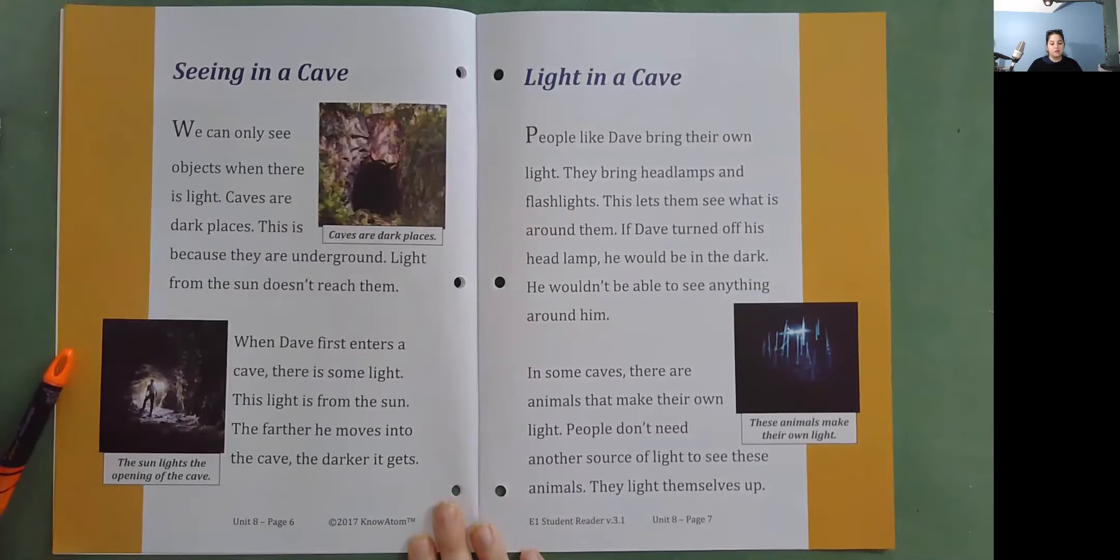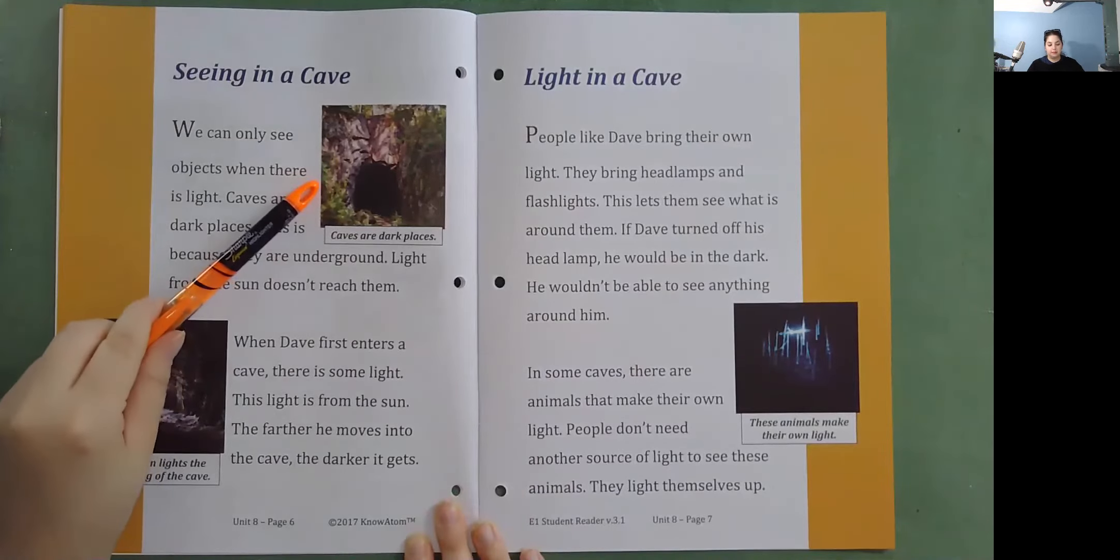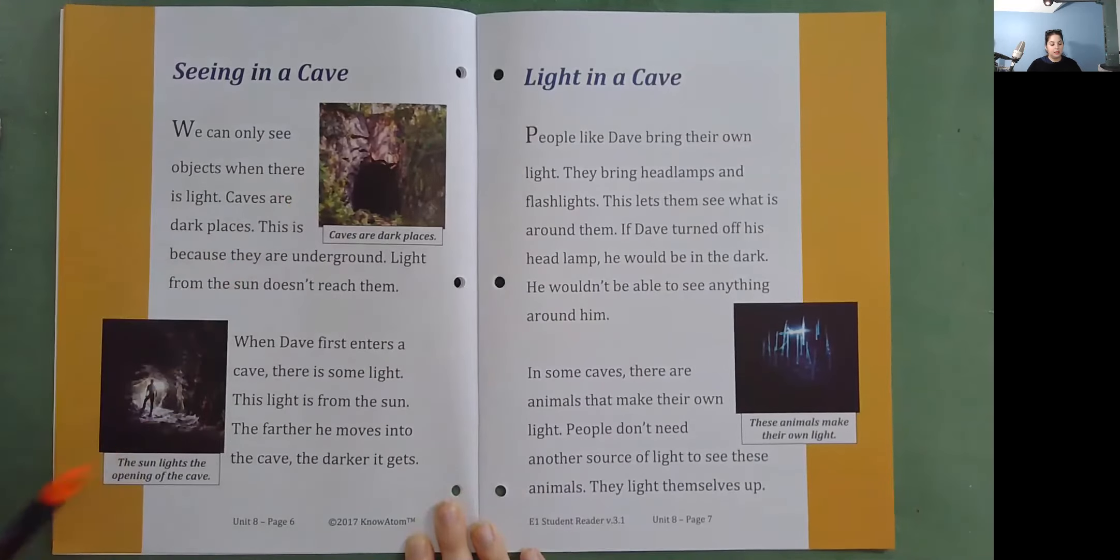When Dave first enters a cave, there is some light. This light is from the sun. The farther he moves into the cave, the darker it gets. Caves are dark places. The sun lights the opening of the cave.